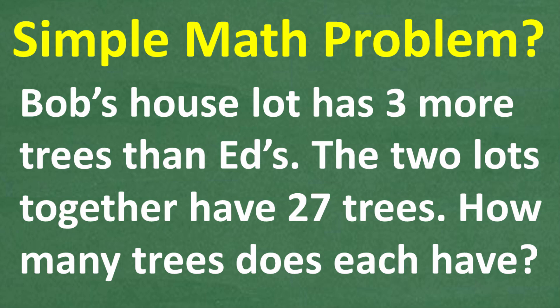Bob's house's lot has three more trees than Ed's. The two lots together have 27 trees. How many trees does each lot have?